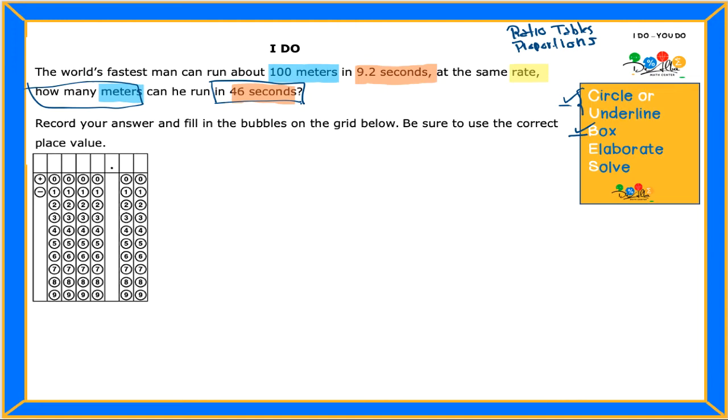So I'm going to bring a ratio table because that's the strategy I'm going to follow. Now I'm going to fill in the table with the labels that I need. On the left side, I'm going to write meters, and then on the right side, I'm going to write seconds. For meters, I'm going to use blue, and for seconds, I'm going to use orange. Now I'm going to transfer the information that is given: 100 meters, that happens in how long? 9.2 seconds.